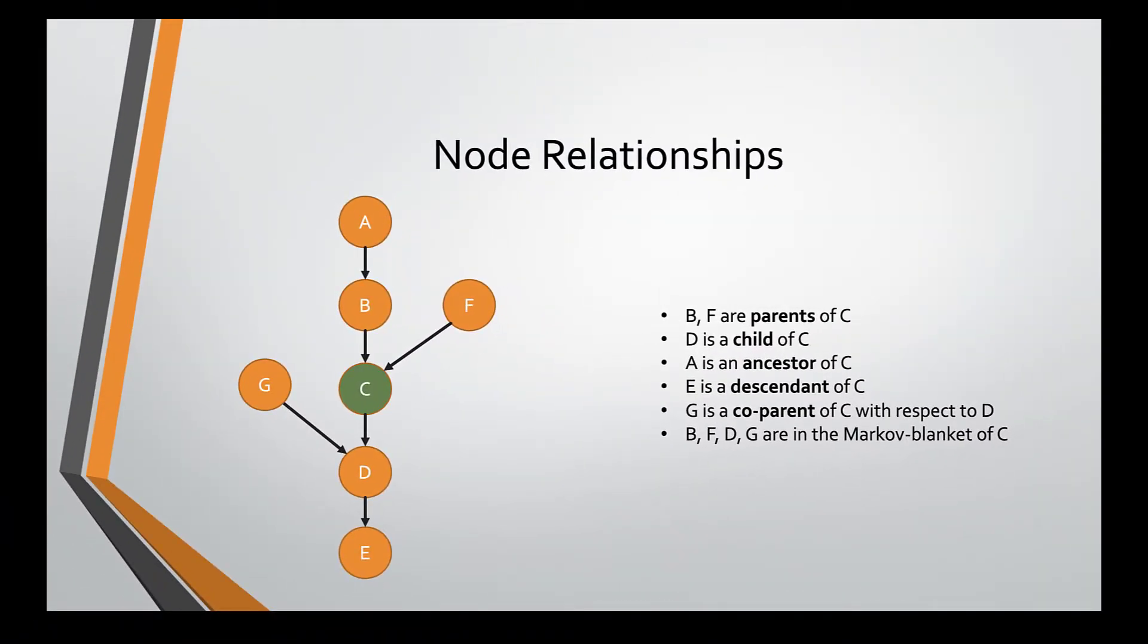Here's another DAG to demonstrate the relationships between nodes. For this DAG, we will use C, the green colored node, as the target node or the node of interest. We will identify all of its relationships to the other nodes. Because there are directed edges from B and F to C, B and F are called parents of C. Since there is a directed edge from C to D, D is said to be a child of C. A is an ancestor of C because there is a path leading from A to C. E is said to be a descendant of C because there is a path leading from C to E. G and C are said to be co-parents because they share a common child, D.